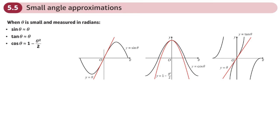This is the last section in the radians chapter, chapter 5, year 2, pure, and it's something called the small angle approximations.